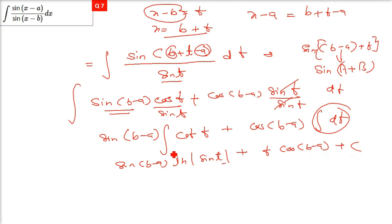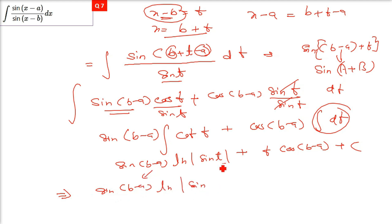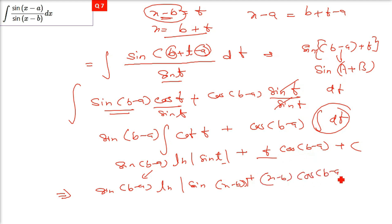The result isn't complete yet because t was introduced by us. Replace t with (x − b) everywhere: sin(b−a)·ln|sin(x−b)| + cos(b−a)·(x−b) + C. This is your final answer.